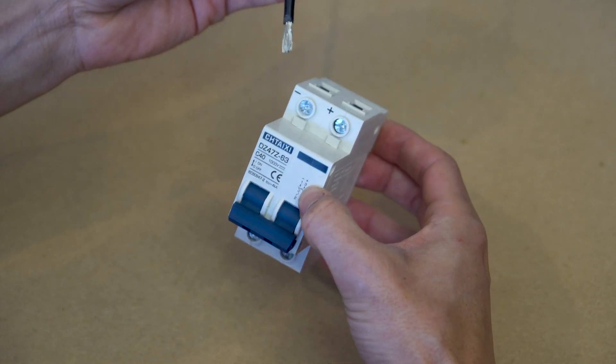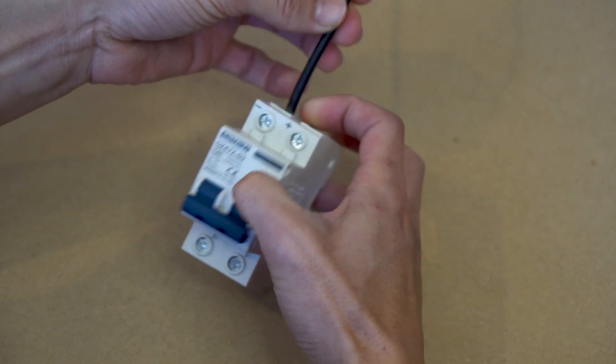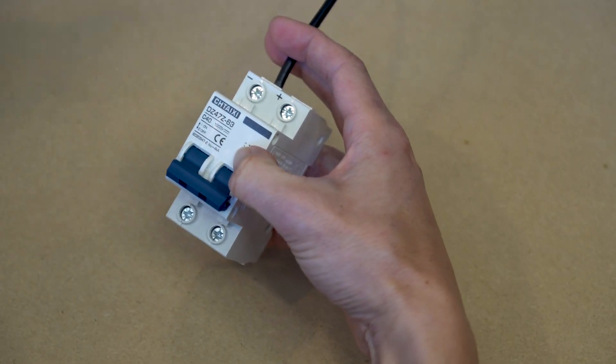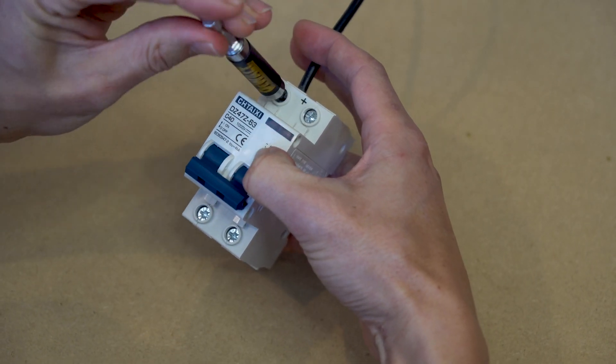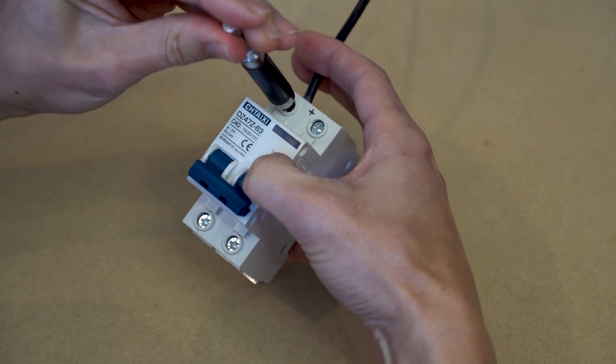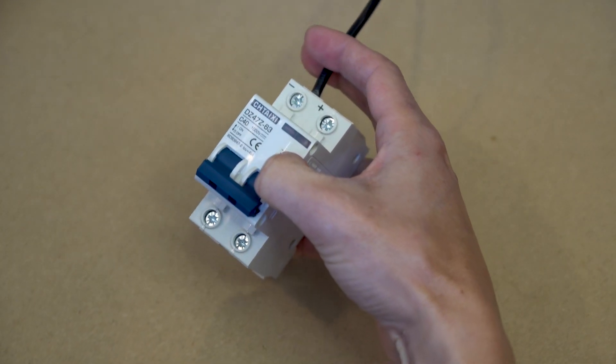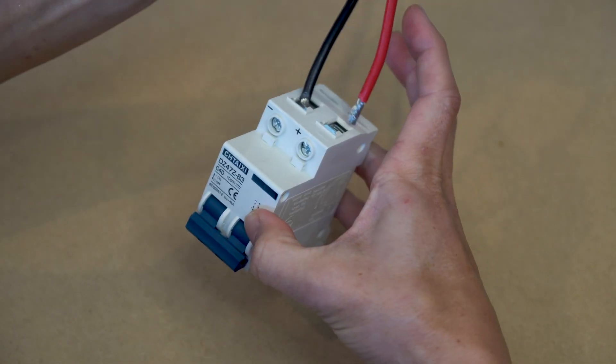Then insert the black wire into the correct slot and tighten down with a screwdriver. When you're done do the same with your positive red wire.